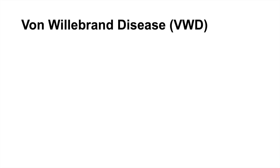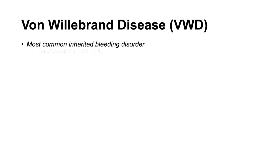In this lesson we're talking about von Willebrand disease. Von Willebrand disease is important because it is the most common inherited bleeding disorder, and it is due to an issue with von Willebrand factor. It's so common that it affects about 1% of the population, and men and women are equally affected.